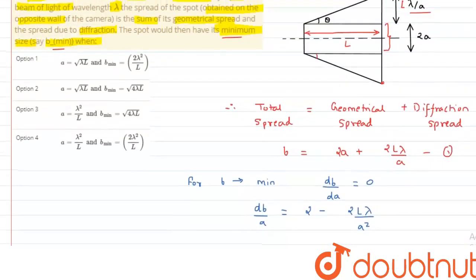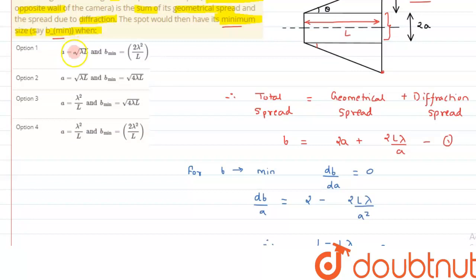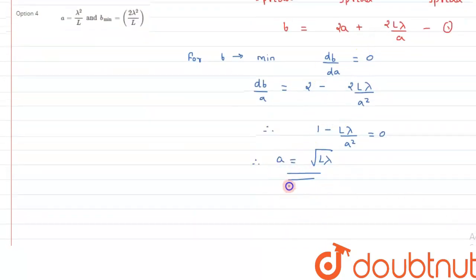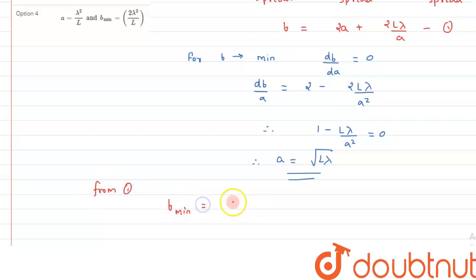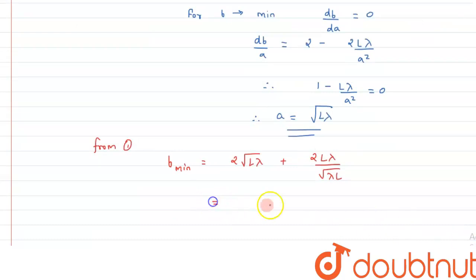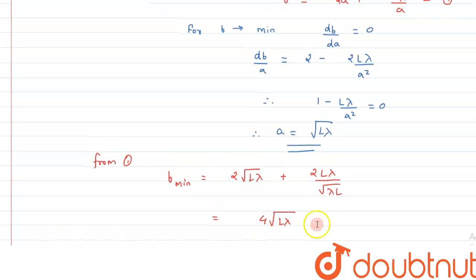The value of a can be written as under root of L lambda. Comparing with the options, option one matches for the radius. Now we calculate the value of b minimum by substituting this value of a into equation one. From equation one, b minimum equals 2 root L lambda plus 2L lambda upon root L lambda.